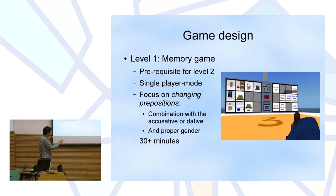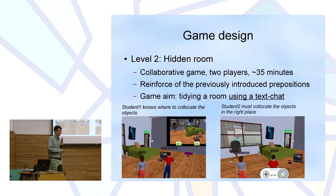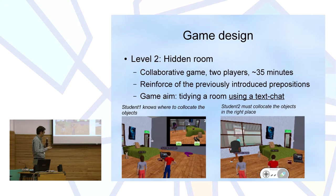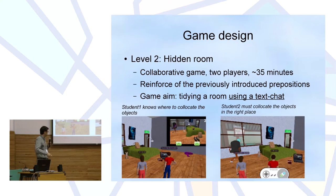In the first level, students play alone — a single-player level lasting about 30 minutes. Then, in the more interesting second level, two students interact trying to tidy a room. The story is that you had a party last night and your parents are coming. One student knows where everything has to go — the backpack, chair, lamp — but cannot move anything. The other can move things but doesn't know where to place them. So they have to interact using a text chat to direct each other, saying things like 'put this on the table' or 'put this down here.'